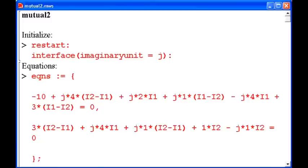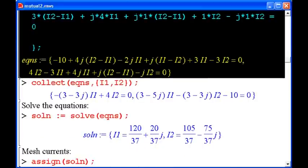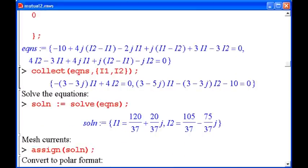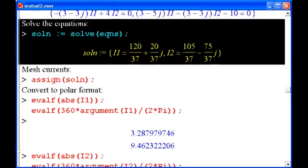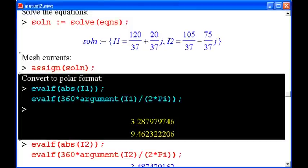Now I've jumped to my Maple worksheet with the solution. So there's the equations in a somewhat simplified form after I collect the terms. Right there. Solving the equations. And then assigning those, we end up with 3.29, if I round that, 3.29 amps at a phase of 9.5 degrees.